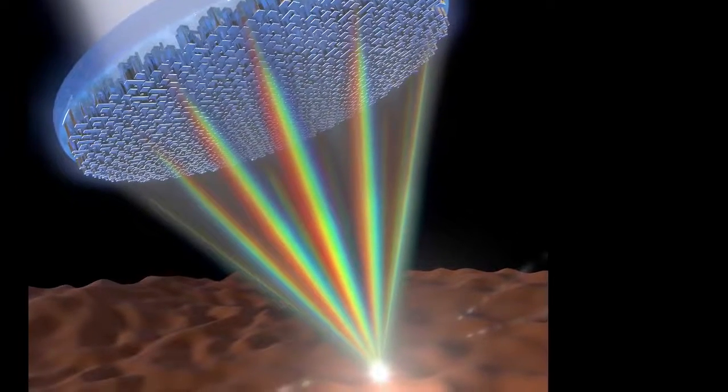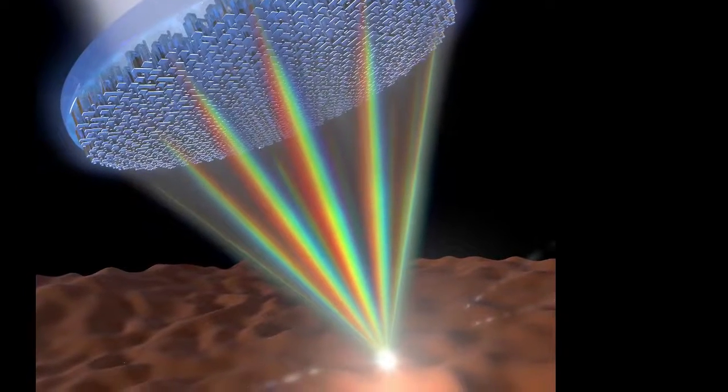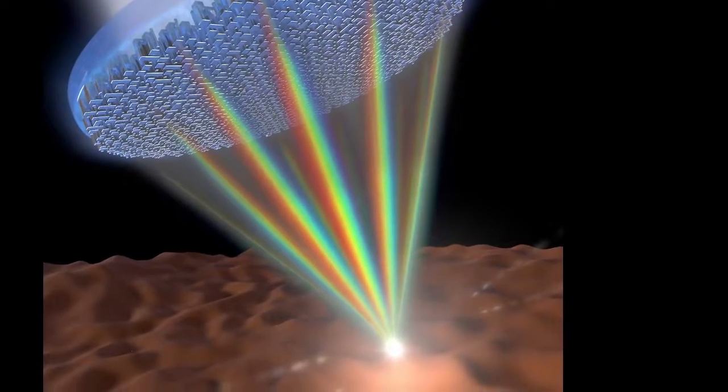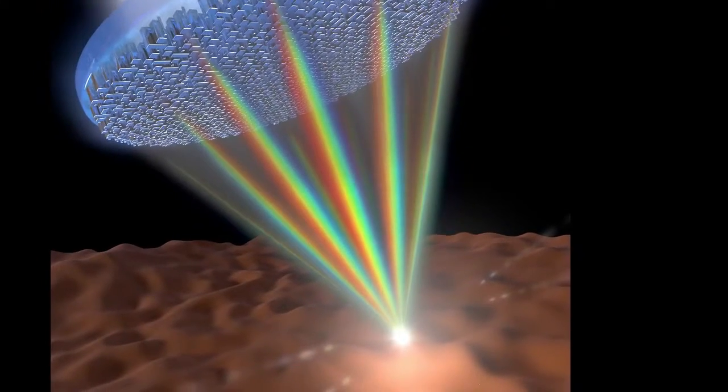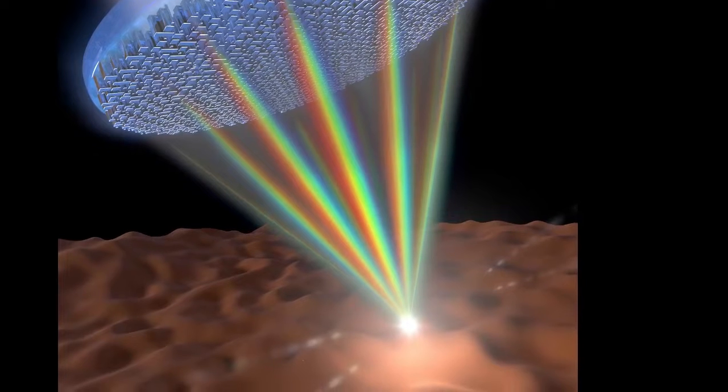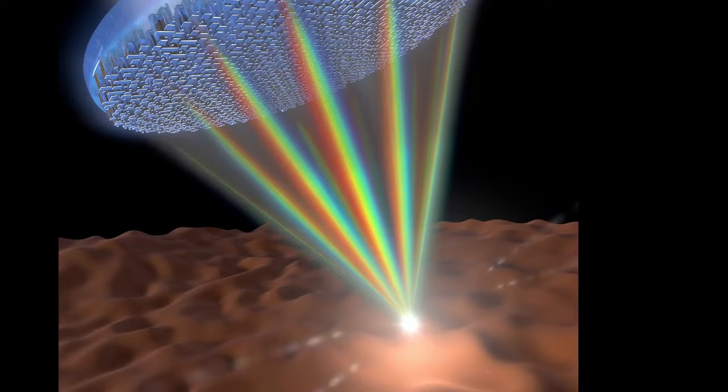But these meta lenses have remained limited in the spectrum of light they can focus well. Now, a team of researchers at Harvard has developed the first single lens that can focus the entire visible spectrum of light, including white light, in the same spot and in high resolution. This has only ever been achieved in conventional lenses by stacking multiple lenses.